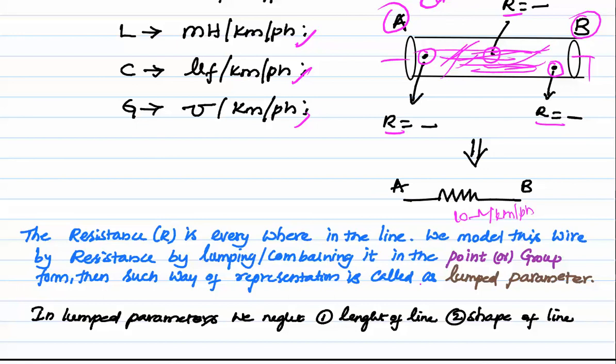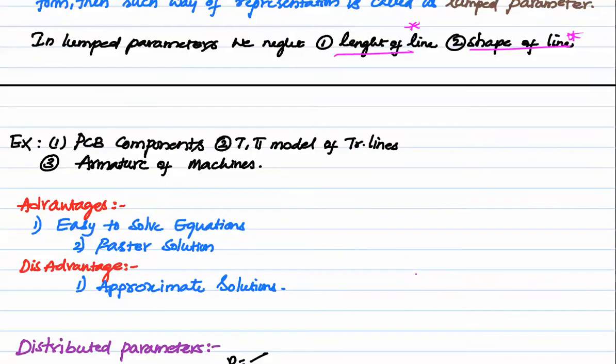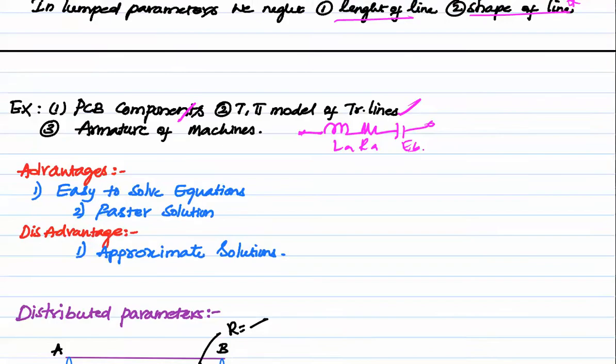In lumped parameters, we neglect the length and shape of the line — this is very important and may appear in GENCO, TRANSCO, or GATE exams. Examples of lumped parameter representation include PCB components, T and pi models of transmission lines in power systems, and the armature of a DC machine represented as La, Ra, Eb. The advantage of the lumped parameter model is that it is easy to solve equations and gives a faster solution. The drawback is that the solution obtained is approximate, not exact.